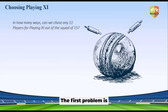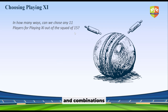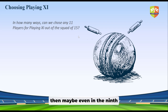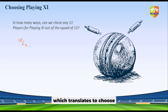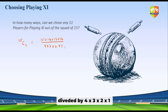The first problem is: in how many ways can we choose 11 players for the playing 11 out of the squad of 15 players? The concept being used is from the chapter permutations and combinations, which you study in 11th standard in India, or if you are preparing for combinatorics olympiads, maybe even in 9th or 10th grade. The expression is 15C11, which translates to choosing 11 players out of 15. The mathematical expression for this is 15×14×13×12 divided by 4×3×2×1.